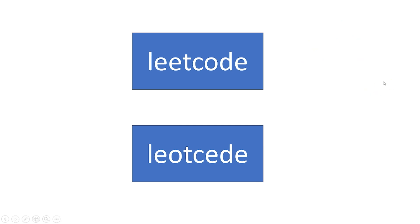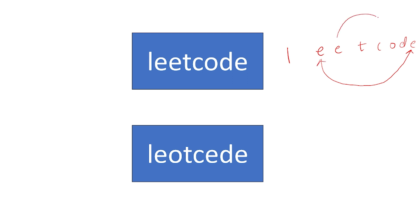Let's take another example: L, E, E, T, C, O, D, E. Here, this first E will be swapped with the last E, and this second E will be swapped with the O. After performing these swaps, it will be visible as L, E, O, T, C, E, D, E. This is the question they have given.